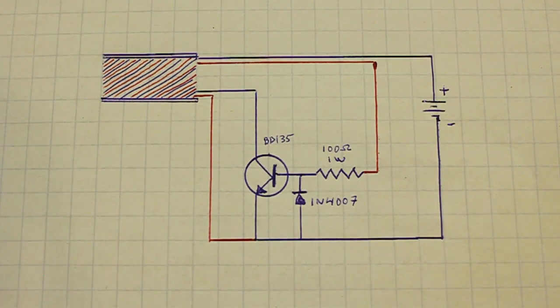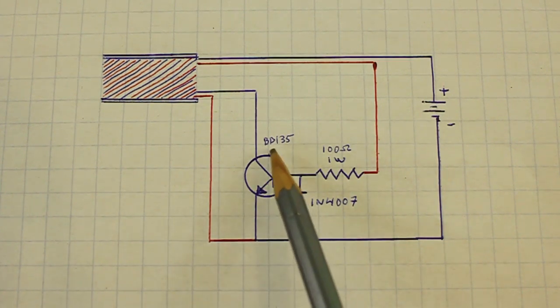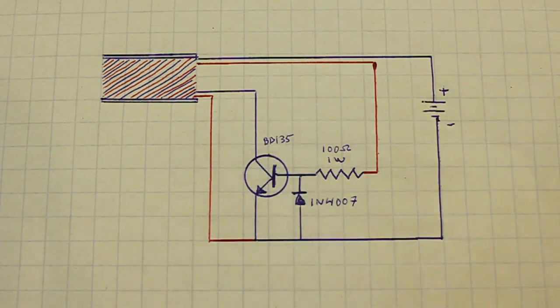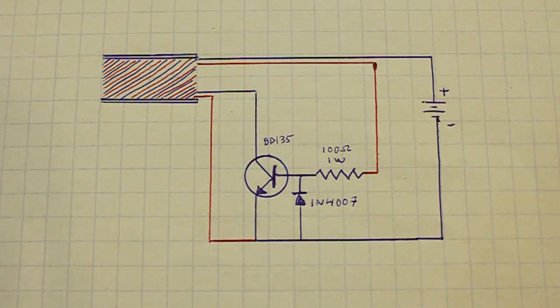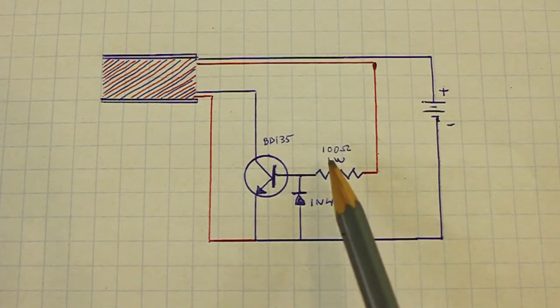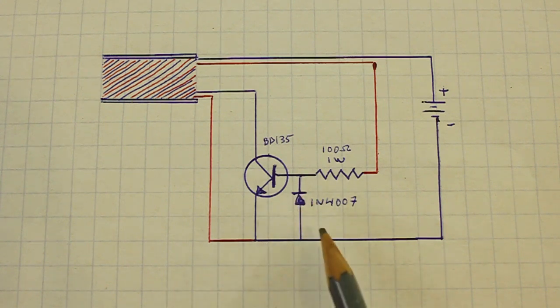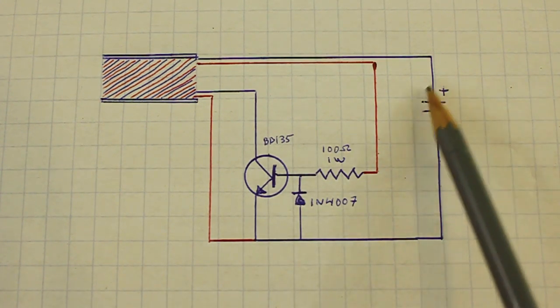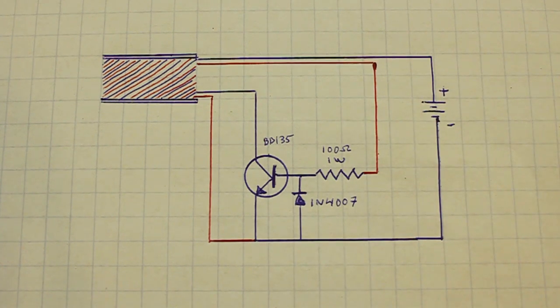The circuit is very simple. Only three components: a transistor, NPN transistor. I am using a BD135 but practically any NPN power transistor works well for this circuit. A resistor 100 ohms, one watt, and a common diode 1N4007. And here we have our battery or power supply.